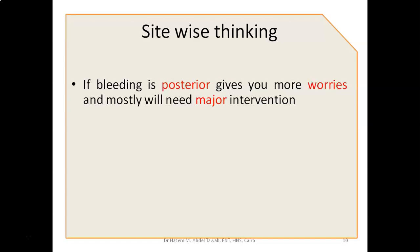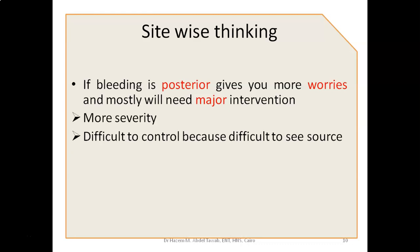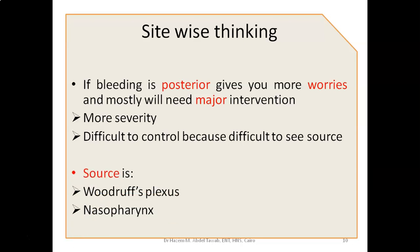But if the bleeding is posterior, you cannot see the source with a simple speculum examination. You may see that the patient has post-nasal bleeding — blood coming through the nasopharynx or oropharynx. This gives you some worry, because it will usually need major intervention, is more severe, and is difficult to control because it's difficult to see the source. The bleeding here comes from the Woodruff's plexus, or from the nasopharynx — for example, if the patient has a nasopharyngeal angiofibroma, a carcinoma, or bleeding after an adenoidectomy.